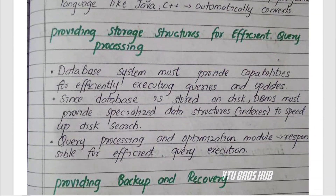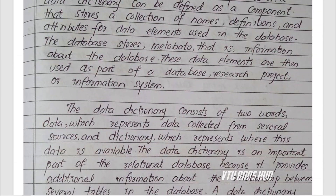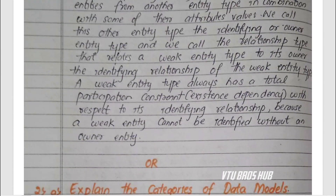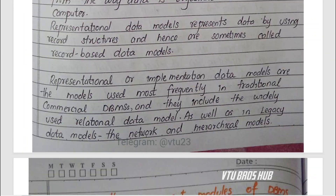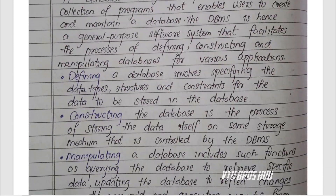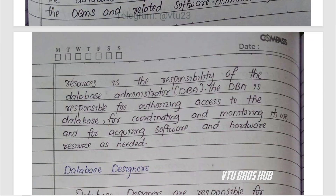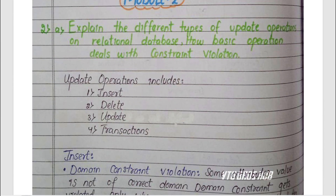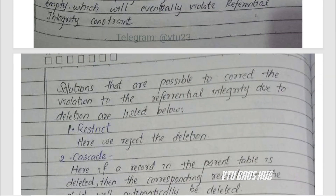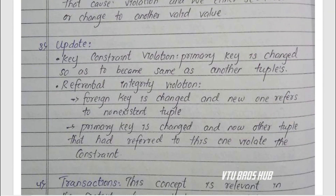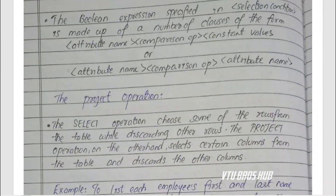Here are some expert tips to score 80 marks in your DBMS exam. Focus on diagrams — ER diagrams, normalization steps, and architecture diagrams carry easy marks. Master SQL: practice SQL queries and syntax, it's a must for both theory and lab. Use VTU keywords — examiners love structured, textbook style answers. Write examples: don't just explain, show how. Revise previous year papers — that's why this video with model 1 and model 2 is gold. And remember, consistency in presentation matters.